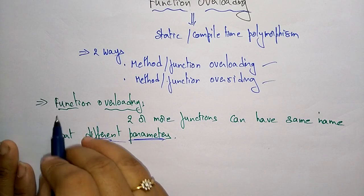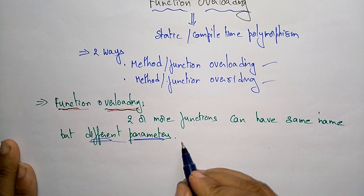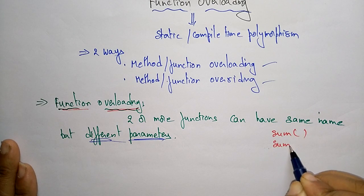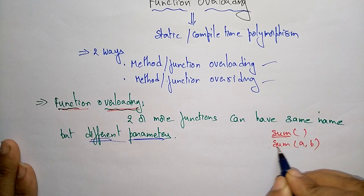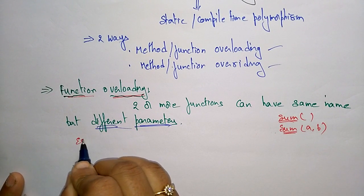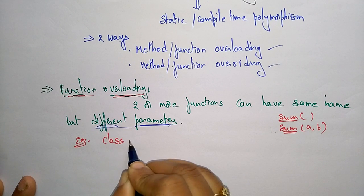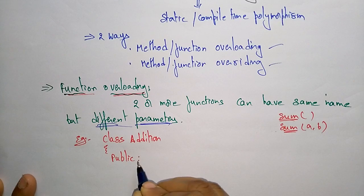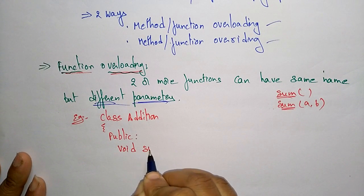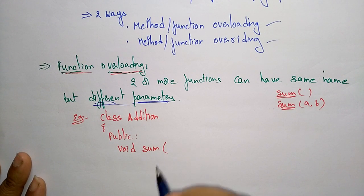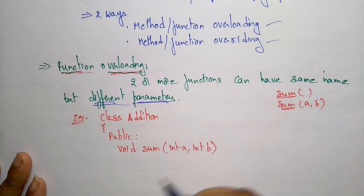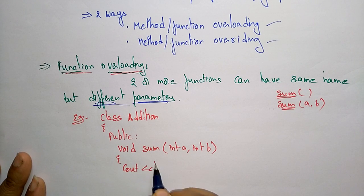For example, suppose 'sum' is a function name — another function is also having the same name 'sum' but with different parameters. That is function overloading. Let's see the code example. Class 'addition' — public. The function name is 'sum': void sum with two parameters, int a and int b, and we print c out a plus b.